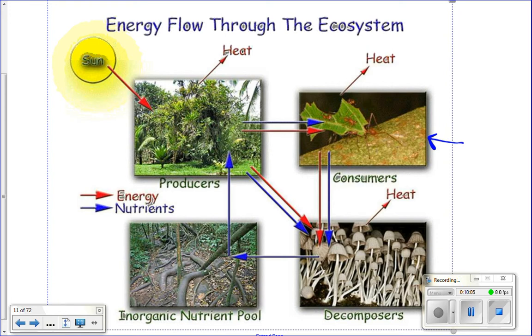When the primary producers or the consumers die, decomposers break them down. And so the decomposers will get the last vestiges of energy out of whatever has died, and then the matter gets put back into the nutrient pool, and then those can be reused by the primary producers. So energy only goes one way through the ecosystem, whereas matter gets recycled.